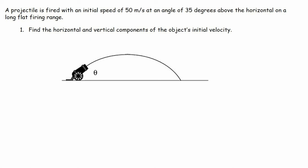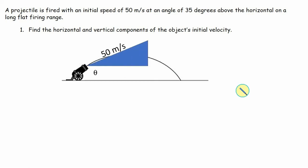Problem one: find the horizontal and vertical components of the object's initial speed. As this projectile is launched from the cannon, it's going to have some initial speed in both the x and y directions. It's launching at 50 meters per second overall, but it will have a speed in the x direction — labeled VXI — and a speed in the y direction — labeled VYI. In projectile motion, you have to keep track of both x and y axes separately, because there's no common link except for time.